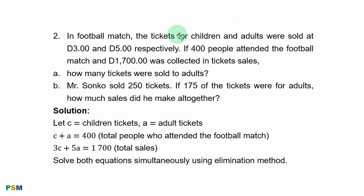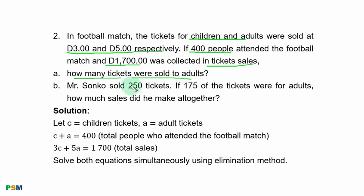Question 2. In a football match, tickets for children and adults were sold at 3D and 5D respectively. If 400 people attended the football match and 1,700D was collected in ticket sales. Part A: how many tickets were sold to adults? Part B: Mr. Sonko sold 250 tickets. If 175 of the tickets were for adults, how much sales did he make altogether?